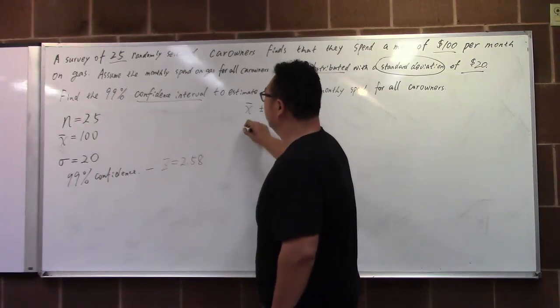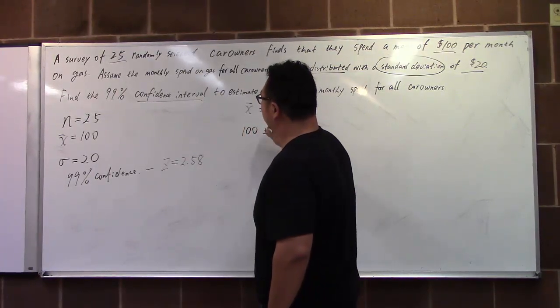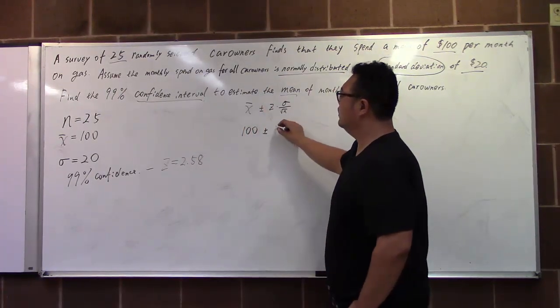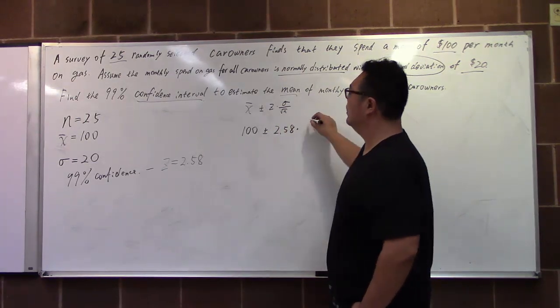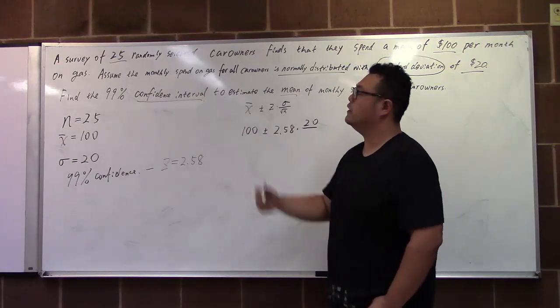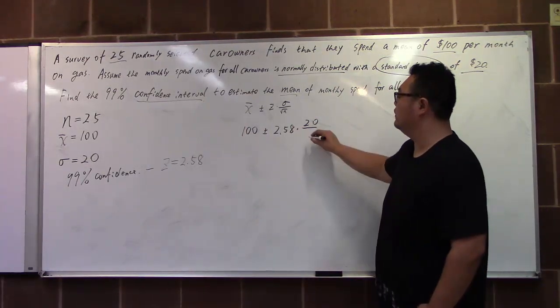So sample mean is 100, Z score we use 2.58, standard deviation is 20, and sample size is 25.